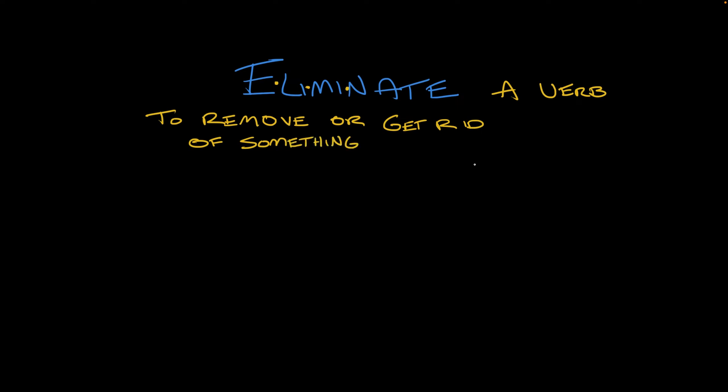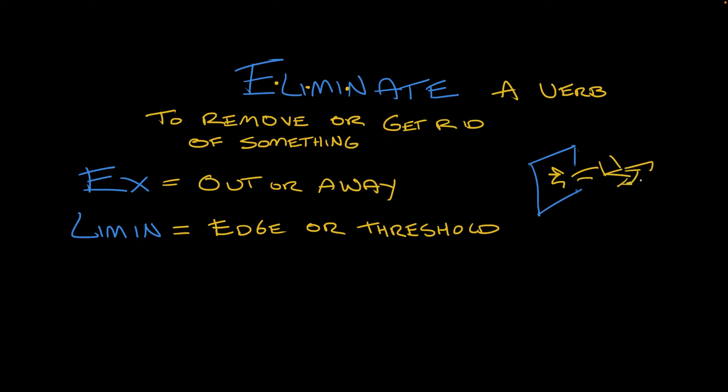The word comes to us from Latin, and it's a combination of two parts. Ex, which means out or away, think exit, and limen, which means edge or threshold, think limit. You're pushing something over the threshold and out the door. There he goes.